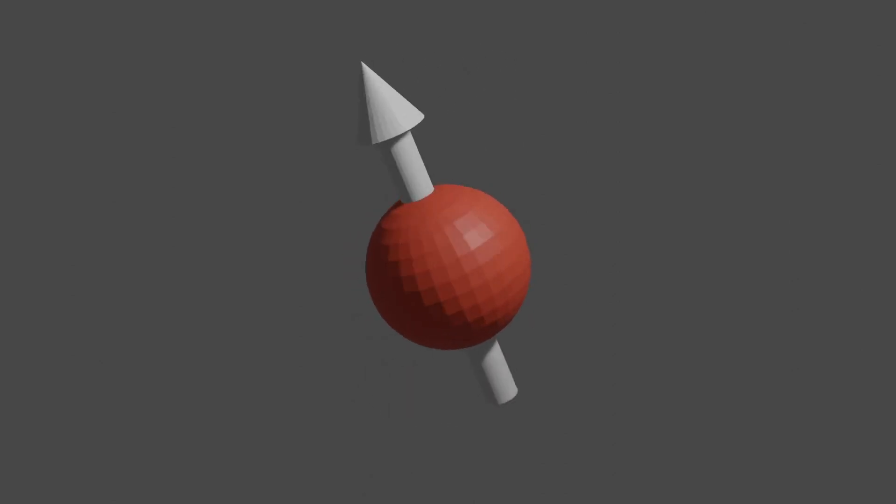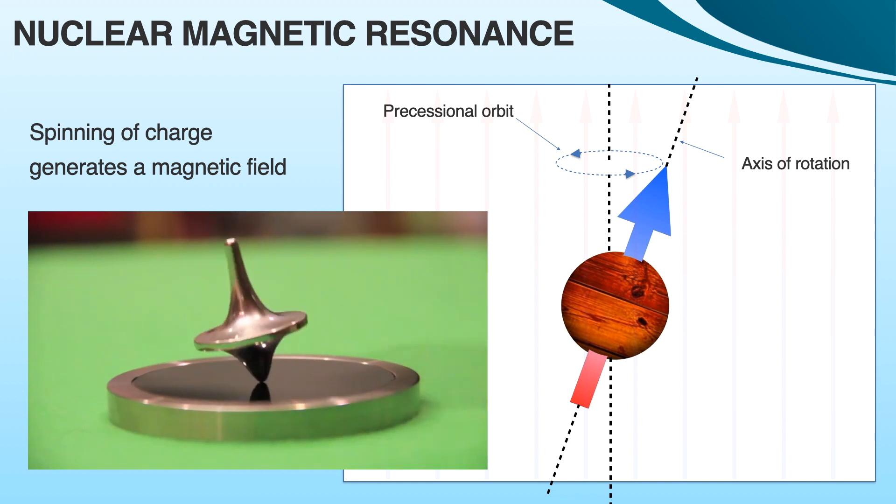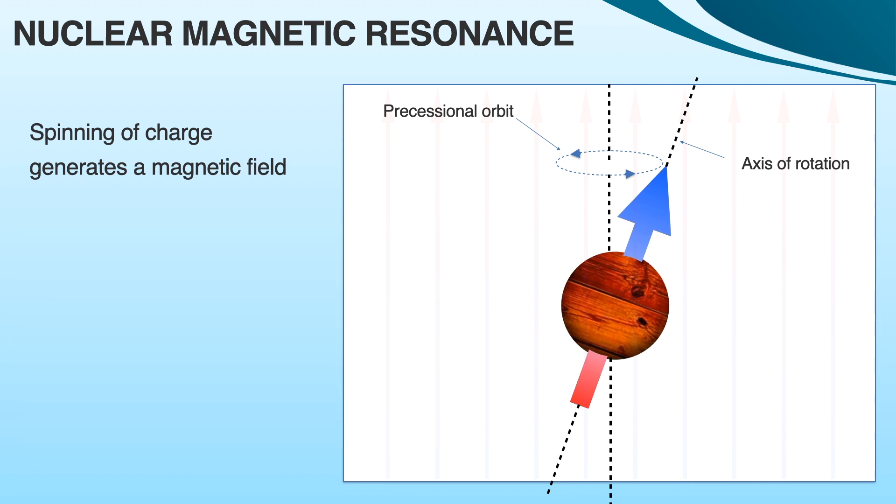The best example of precession is the spinning top. As you can see in this video, the top is spinning as well as the axis of spin is revolving at the same time. Similarly, the spinning nuclei also start doing precession.